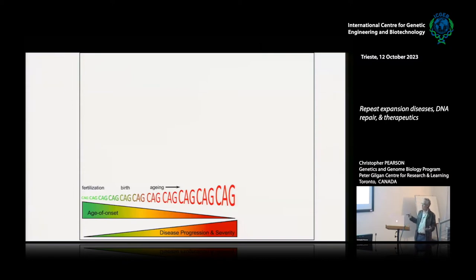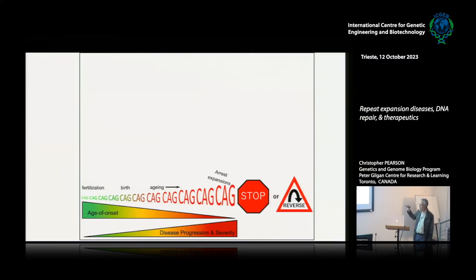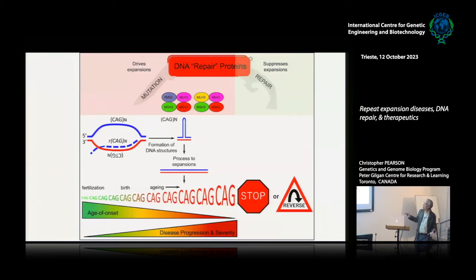A person will inherit a certain repeat size, and over time this gets larger in some tissues — it's even specific at the cellular level. If a person has very rapid somatic expansion, it changes the age of onset to younger and younger, and also changes disease progression rate and severity. Understanding how this happens is really important because we'd like to either stop those expansions or even better reverse them. This has been the focus of my lab's research for 30 years. We know that transcription across the expanded repeat is needed for instability — without transcription you stabilize it, but you'd also lose the gene product.